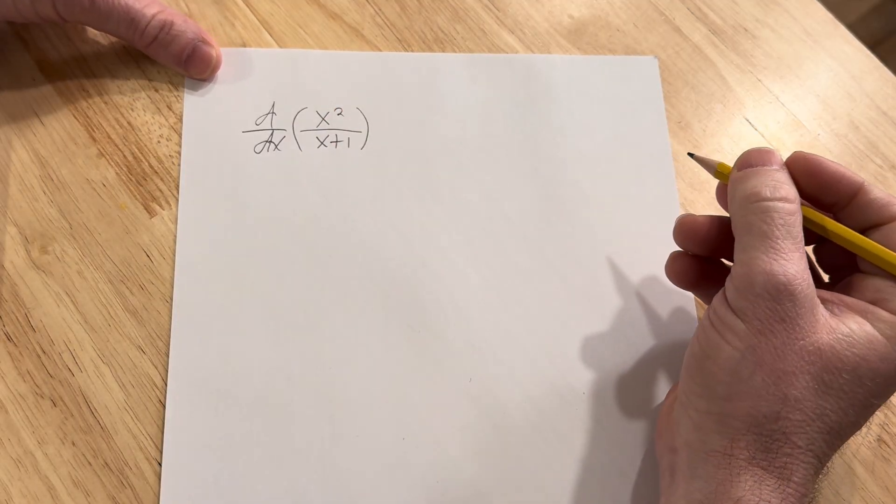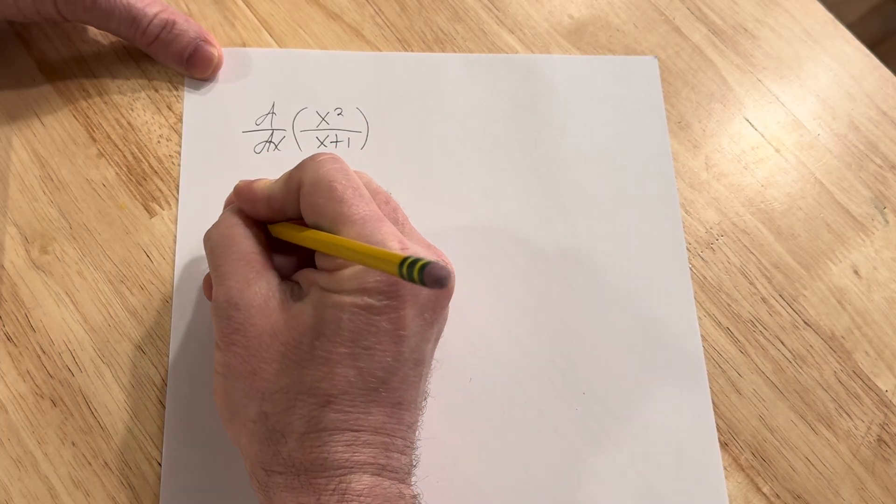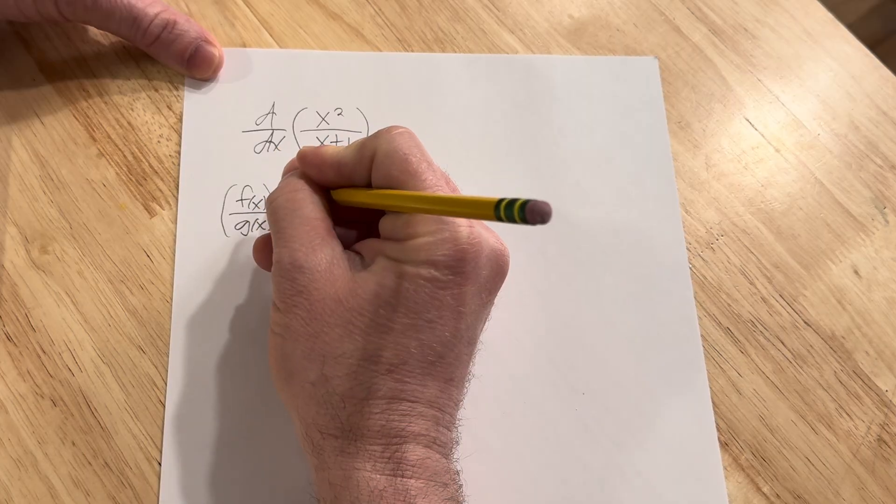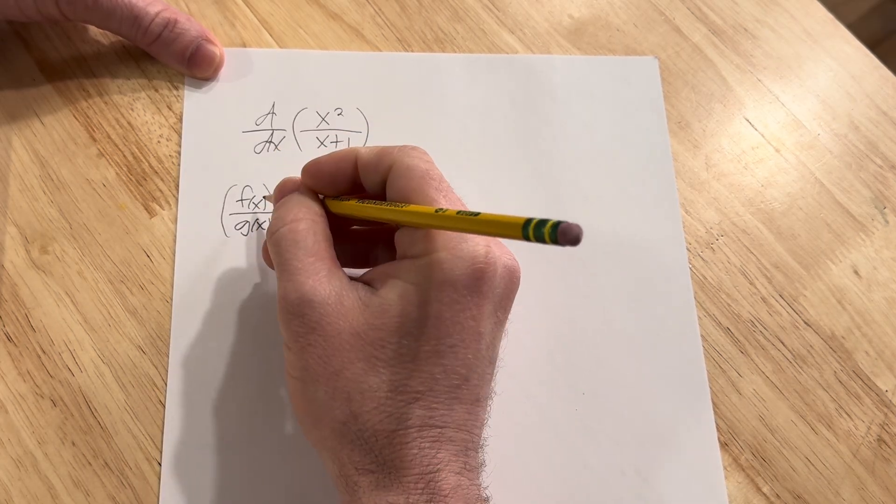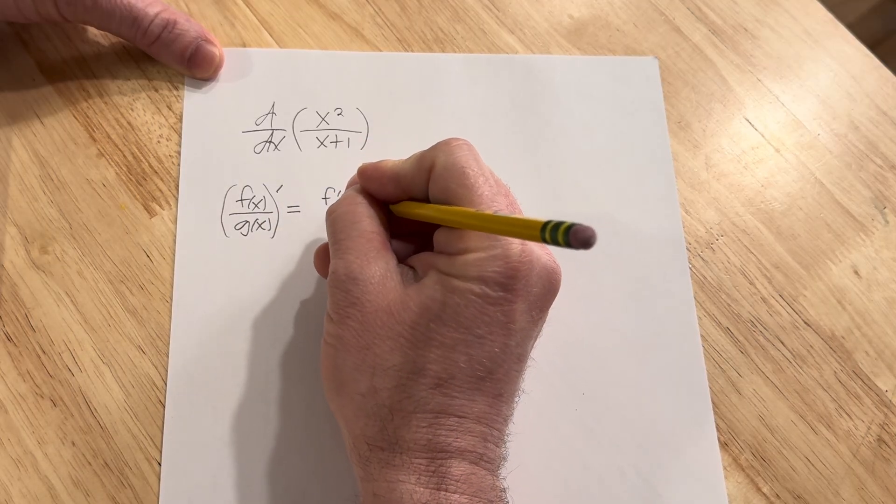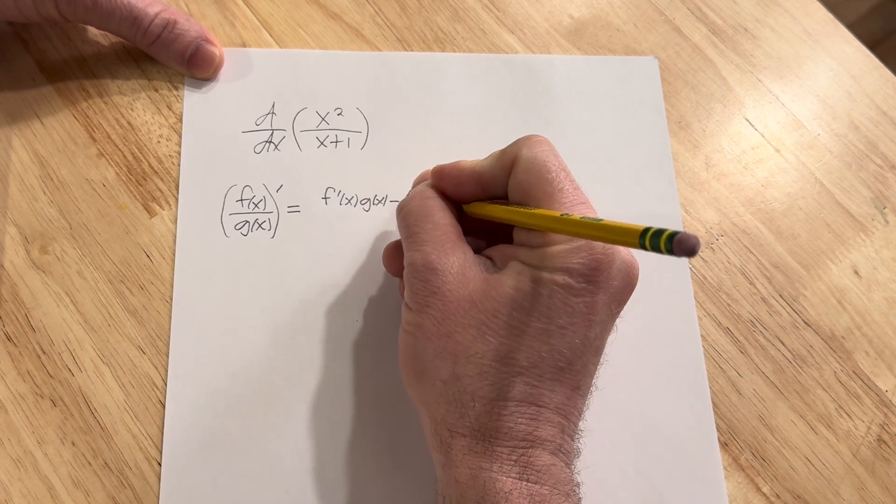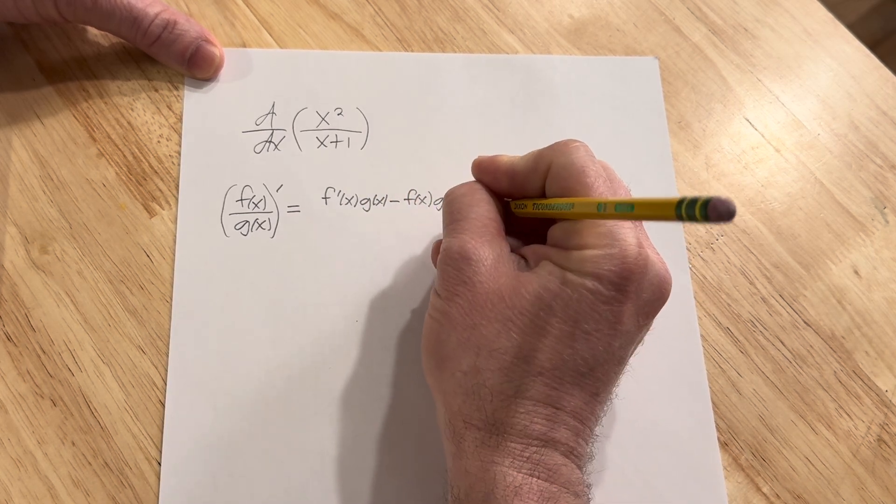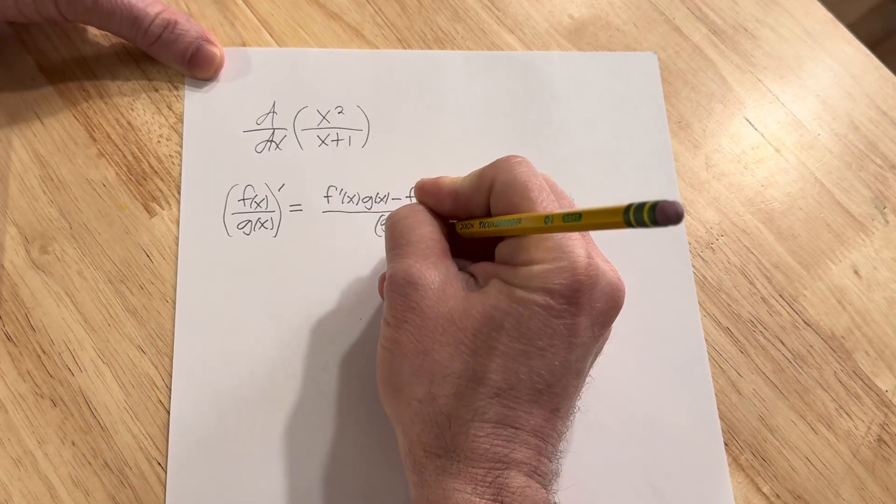So there is a formula for the quotient rule. It says that if you have a quotient, f of x over g of x, and you want to take the derivative with respect to x, think of f as your top function and g as your bottom function. So it's the derivative of the top times the bottom minus the top times the derivative of the bottom, all divided by the bottom squared, so g of x quantity squared.